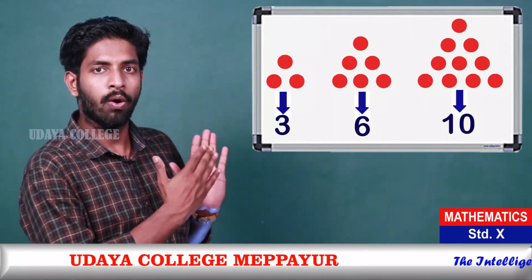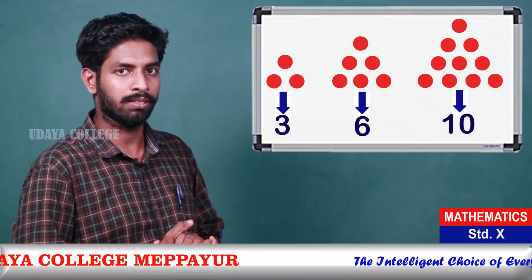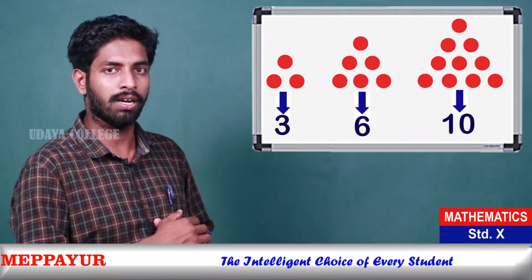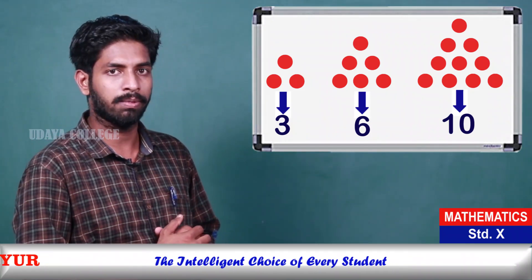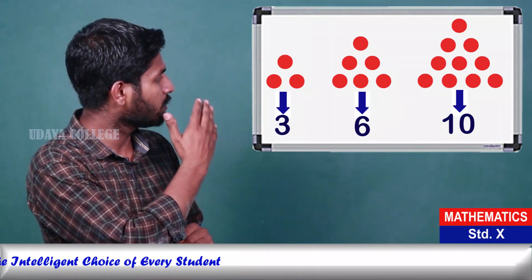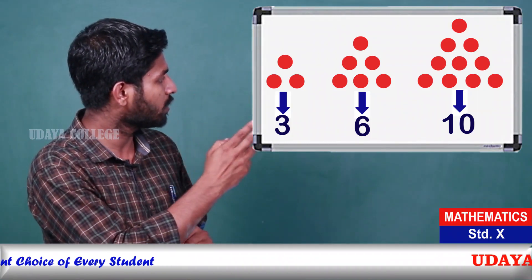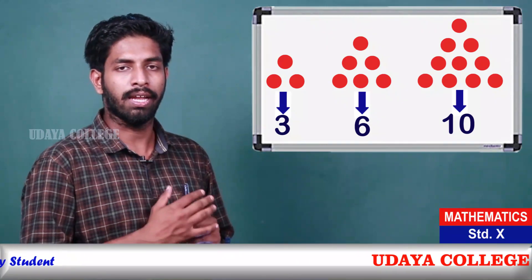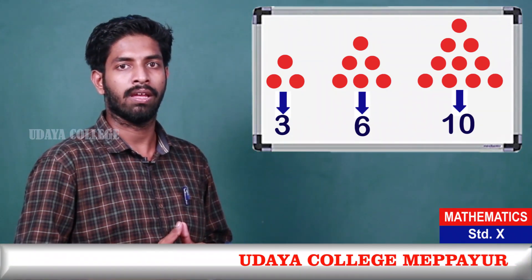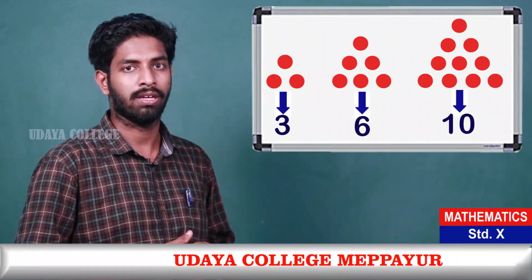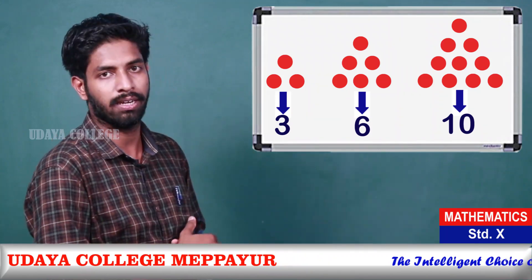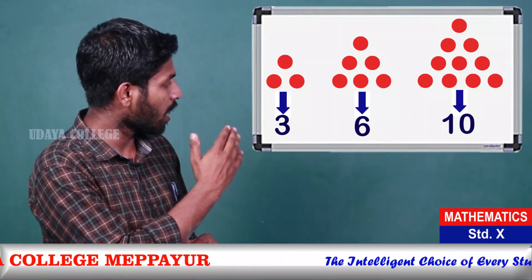Here I am going to show you a question. 1, 2, 3. Then 2, 3, 4, 5, 6. Then 3, 4, 5, 6, 7, 8, 9, 10. Find out the dots pattern. The first one is 3, the second one is 6, and the third one is 10. So: 3, 6, 10.